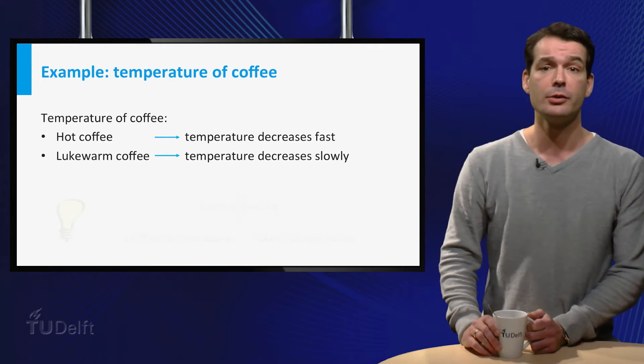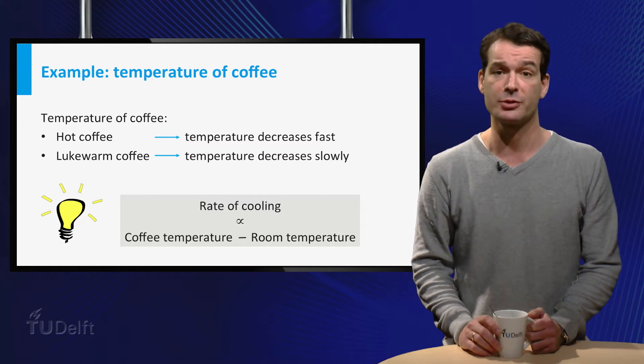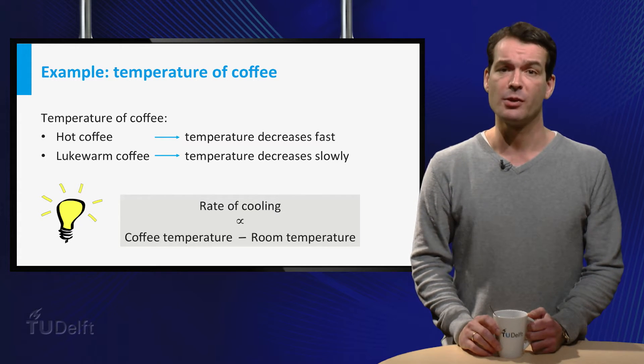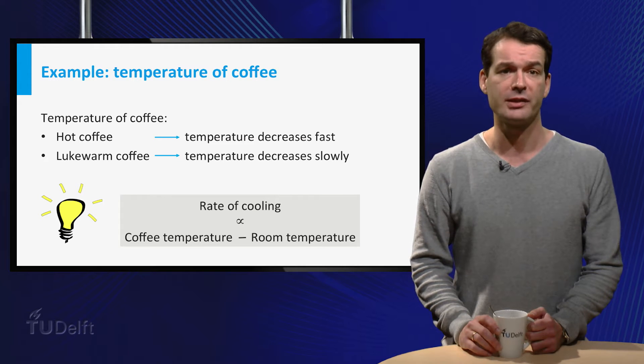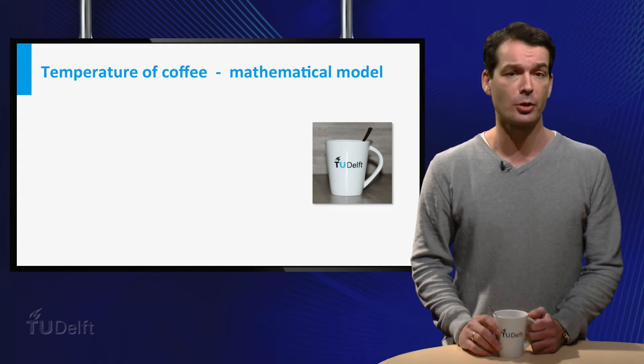So it seems reasonable to assume that the rate of cooling is proportional to the difference of the temperature of the coffee and the room temperature. This is, of course, just a simplification of the real situation, but it actually turns out to be quite accurate. OK, let's try to put this into a formula.